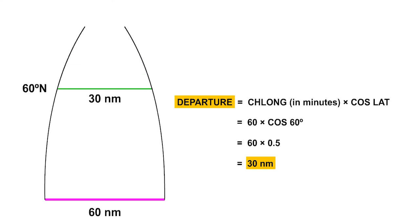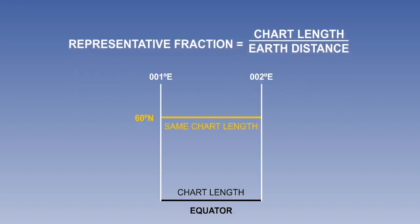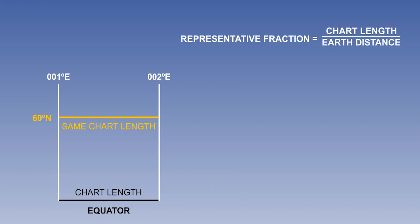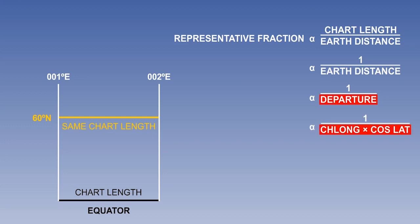So when we draw them as parallel, we are changing the scale at every latitude. Let's establish what this east-west scale change is. Scale, or representative fraction, is defined as chart length over Earth distance. The fact that the meridians are parallel means that the east-west chart length does not change with latitude, so we can replace the equal sign with a proportional sign and replace the chart length by 1. But what is Earth distance? It's departure.